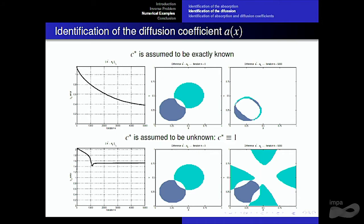We then did the same for the identification of the diffusion coefficient A. First, we assume the absorption coefficient is known exactly and run the algorithm to recover the circular inclusion, starting from an initial condition and converging to the result. However, in some cases with different examples, we also observe a poor identification of the coefficient reconstruction when a good approximation of the absorption coefficient is not available.